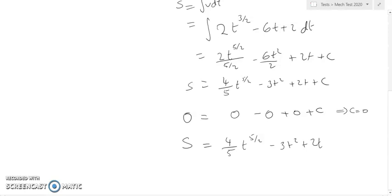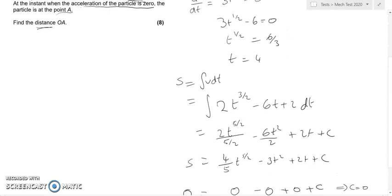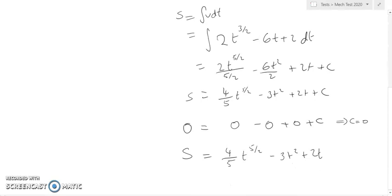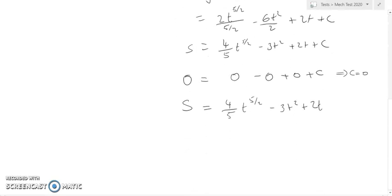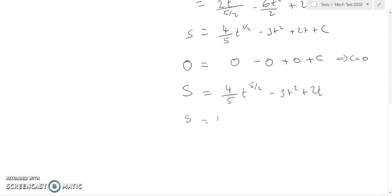So now we're going to sub in t equals 4: 4/5 times 4 to the power 5/2 minus 3 times 4 squared plus 2 times 4.